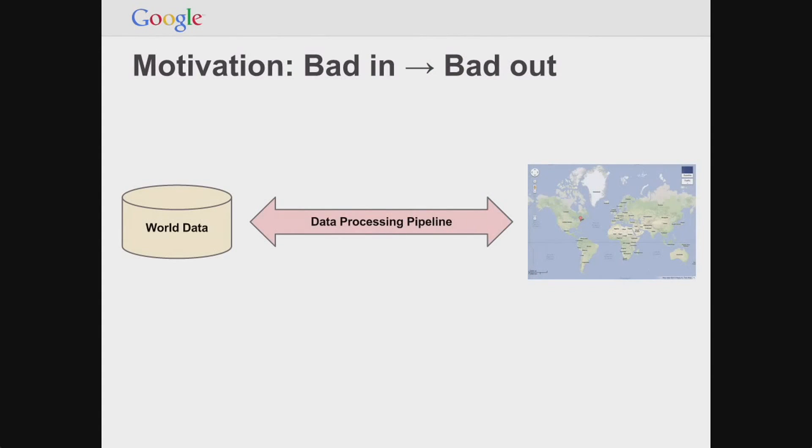So let's talk about how maps get rendered. We have all this data in a large repository, coming in from all these different feeds, creating that world data repository. In the middle, we have a data processing pipeline, sometimes known as our rendering pipeline, which generates images based on all the different features in the world data — things like locations, cities, restaurants, roads, et cetera.